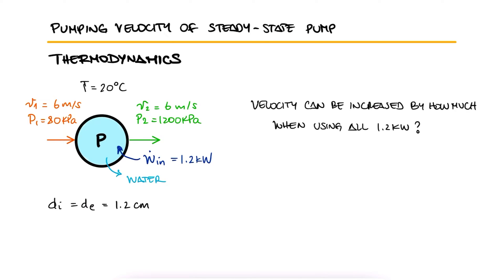We know from the main lecture that the power input of a pump must be equal to mass flow rate times the specific volume times the change in pressure. We have the power, we could find the specific volume at 20 degrees Celsius, and we have the change in pressure.